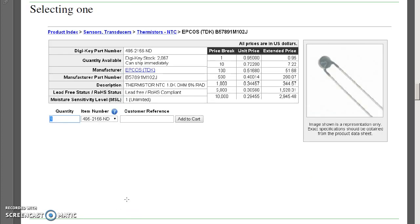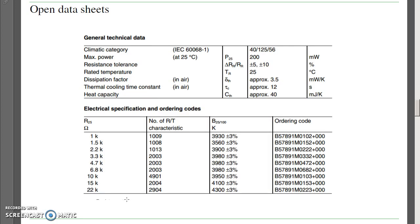When you select it, it tells you the price and quantities of 1, 10, 100, the Digi-Key part number. And also, if you scroll down a little bit, you'll have the data sheets. In the data sheets, what we're looking for are a couple things. The B25 over 1,000, that's the parameter. It tells you the resistance versus temperature relationship.